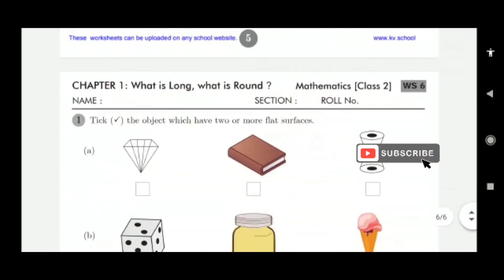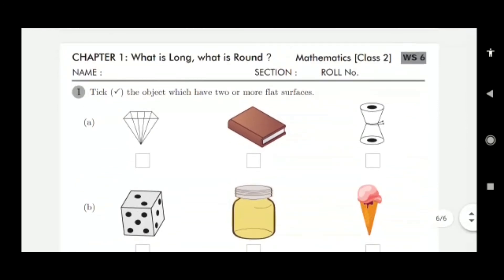Then again another worksheet 6. What is long? What is round? Same mathematics, first chapter only. Tick object which have 2 or more flat surface. It has 2 flat surface, which one?